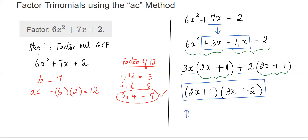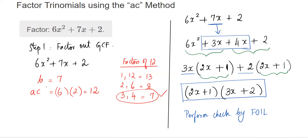To summarize the AC method: find the two numbers using B and AC (not B and C). Once you have those two numbers, insert them in place of the middle term so they split it into two like terms — this turns the trinomial into four terms. Then group them two by two, pull out the GCF within each pair, and that brings you to complete factorization.